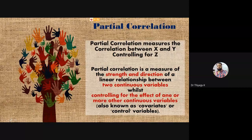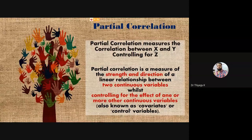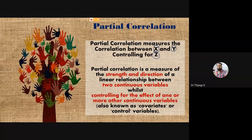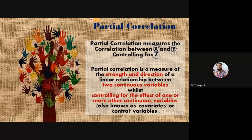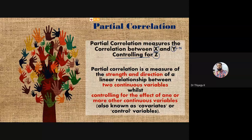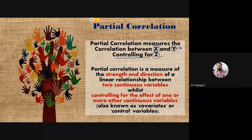For doing a partial correlation, we need three variables — this is the basic condition. X is the independent variable, also called the causing variable. Y is the dependent variable, also called the effect variable or output variable. We need a third variable to control, so we can find out the exact relation between X and Y after controlling the effect of that third variable. This is called partial correlation, where the third variable is called the confounding variable.